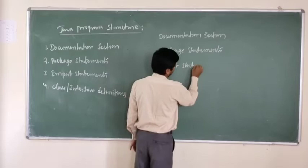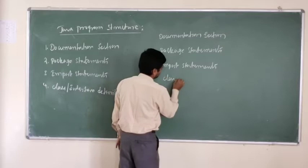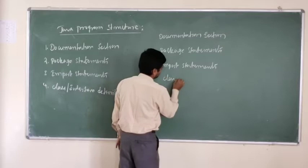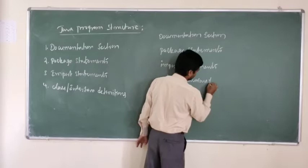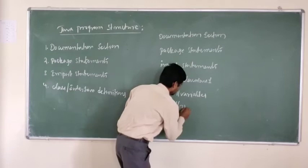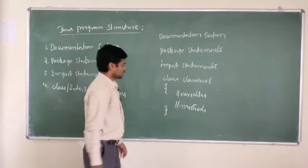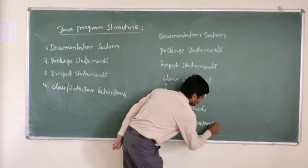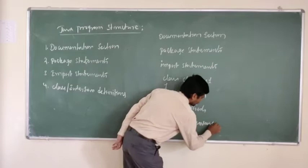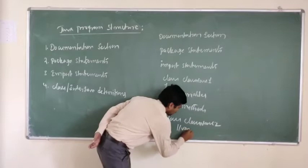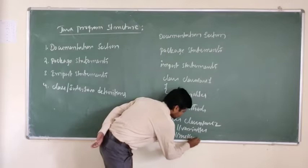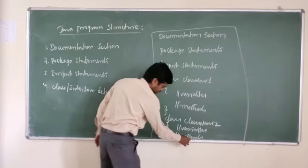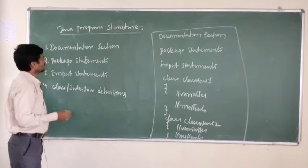Looking at the structure diagram, we have import statements, then class definitions. A class contains instance variables and methods. A program can contain multiple classes — for example class one and class two — each with their own variables and methods. This is the standard Java programming structure. Now we will see each section in detail, one by one.